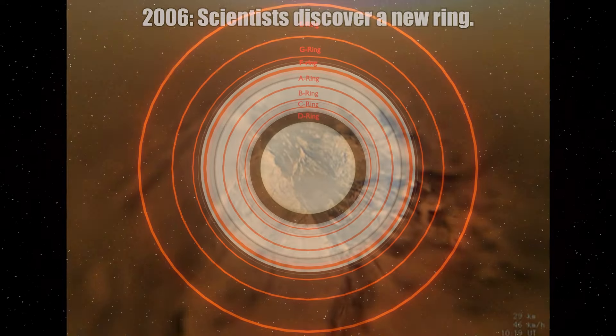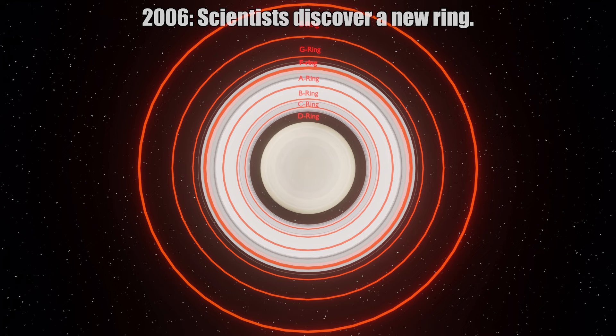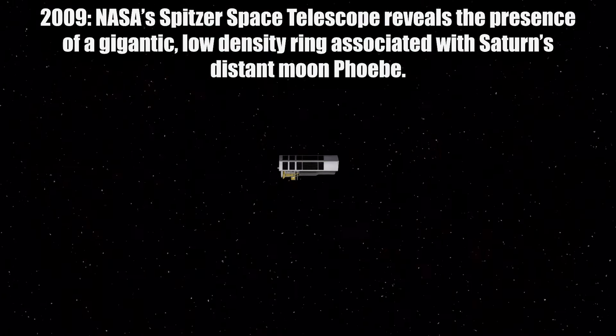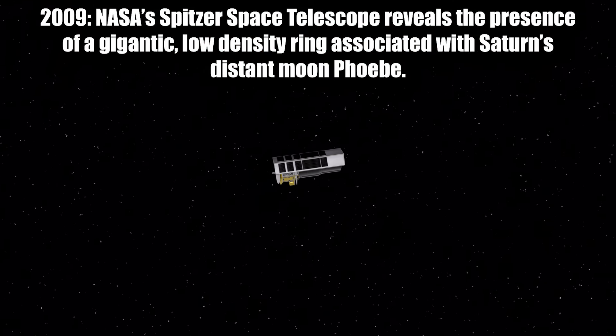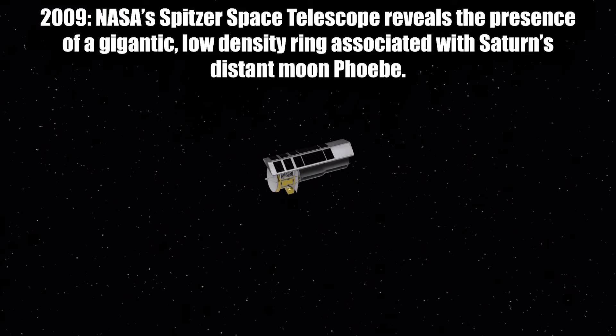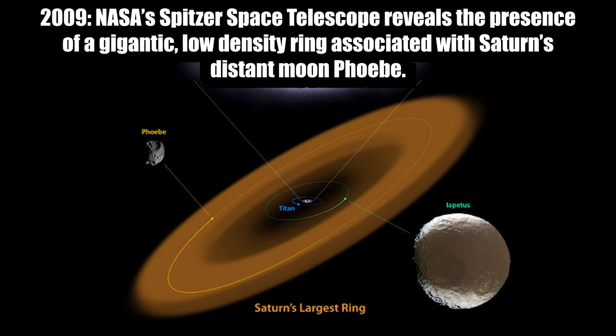In 2006, scientists discovered a new ring. In 2009, NASA's Spitzer Space Telescope revealed the presence of a gigantic, low-density ring associated with Saturn's distant moon Phoebe.